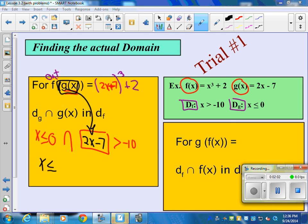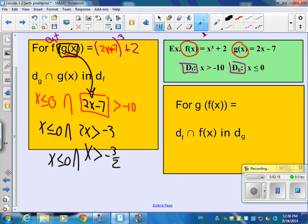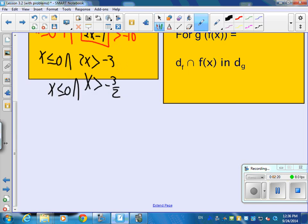So x is less than or equal to 0. 2x is greater than, if I add 7, this will be negative 3. Did you get x greater than negative 3 halves? So we're going to do the intersection of these two. A little tricky because you've got to visualize it on a number line. Here's negative 3 halves. Here's 0. So if it's less than or equal to 0 and greater than negative 3 halves,